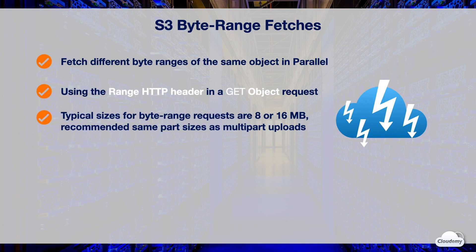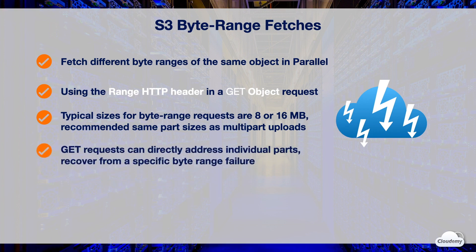If an object was uploaded using multipart uploads, it's a good practice to fetch it in the same part sizes or at least align to part boundaries for best performance. GET requests can directly address individual parts, so you can recover a failure in the download for a specific byte range. You can use S3 byte-range fetches to speed up downloads or just download partial amounts of a file. A common use case is downloading header information as a preview before downloading the whole file. Many video streaming websites use byte-range fetches to provide partial video previews.